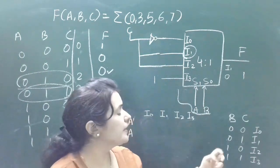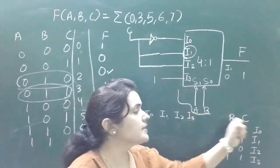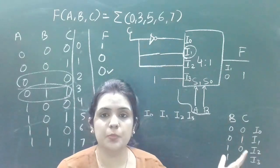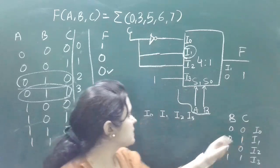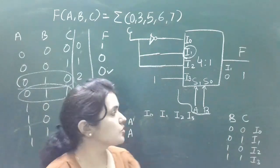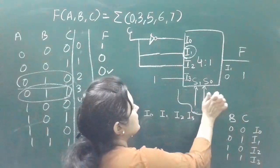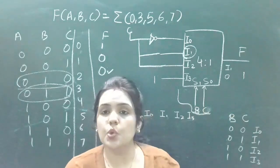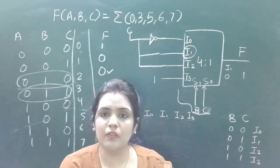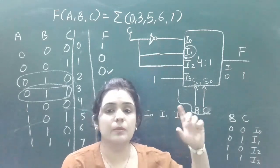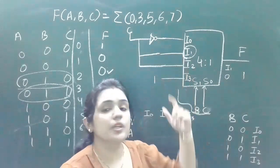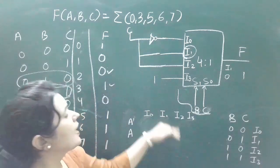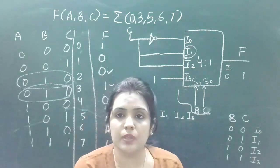Now let's consider the second case where we take B and C as selection lines instead. In that case, the input will be A, not C. A will be connected to input lines in various forms, and the implementation table as well as the circuit diagram will change, but the output functionality will not change.